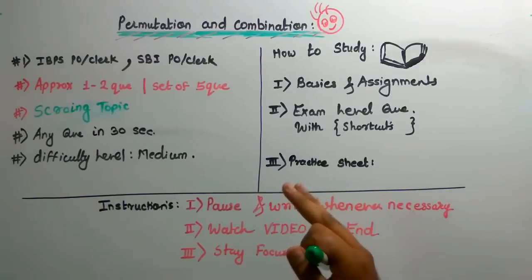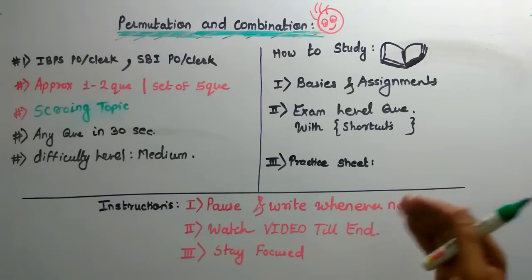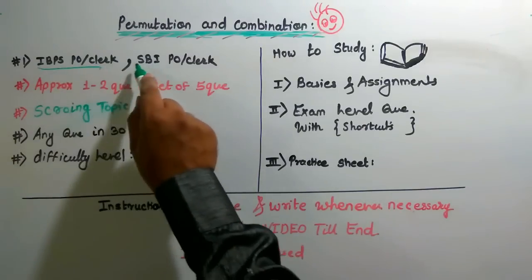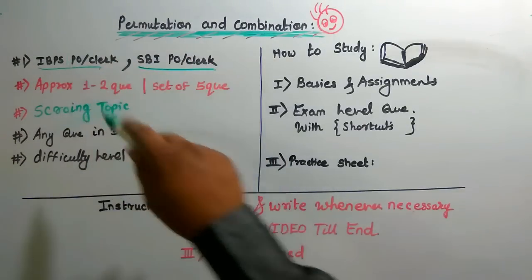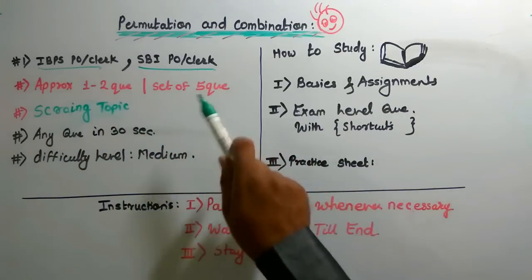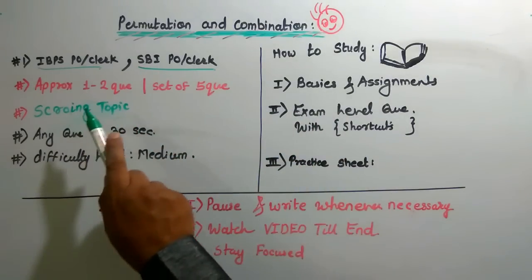Hello everyone, I am Professor Ekhi Mandhan and let's start with today's topic: permutation and combination. How to study permutation and combination and what are the important aspects regarding permutation and combination? First of all, IBPS PO and SBI PO give it very good weightage — 1 to 2 marks and a set of 5 questions. These are two possibilities.